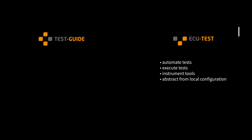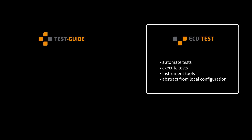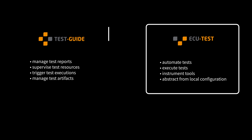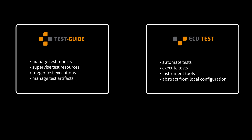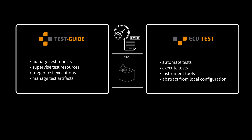So, how does this work with Tracetronic Tools? We can use ECU Test to implement and execute tests. And we can use Test Guide, for example to schedule test executions, to manage test results, and to supervise our test resources. The idea is now to plan our tests with Test Guide, provide the correct sources via ECU Test, and distribute the tests via Test Guide to the test resources.